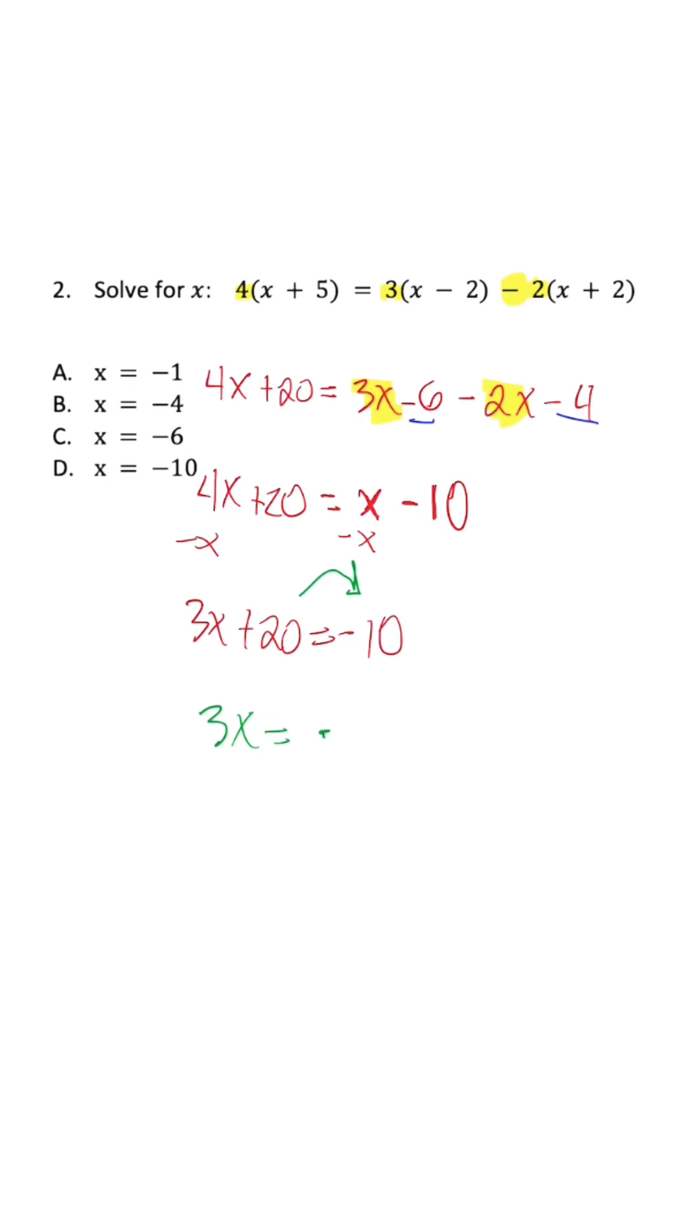3x is equal to negative 10 minus 20, which is negative 30. Once we divide, x is equal to negative 10.